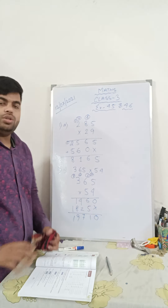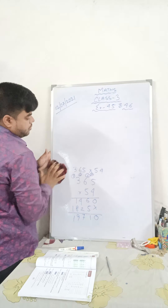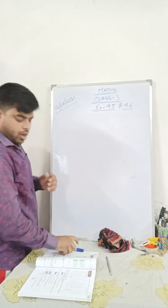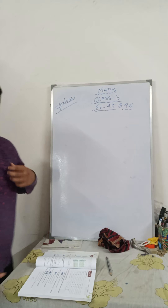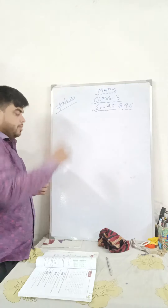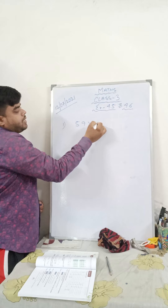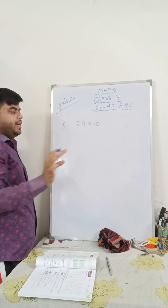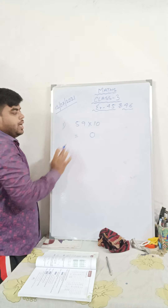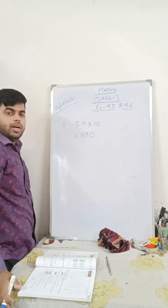Whenever you multiply any number with either 10, 100, 1000, or any number which has a 0 at the last, it is very simple to multiply. Suppose we take the example: 59 multiplied by 10. You don't have to multiply directly. You have a 0 at the last, so you put on a 0 — and 59, 10 gives you 590. This is your answer.